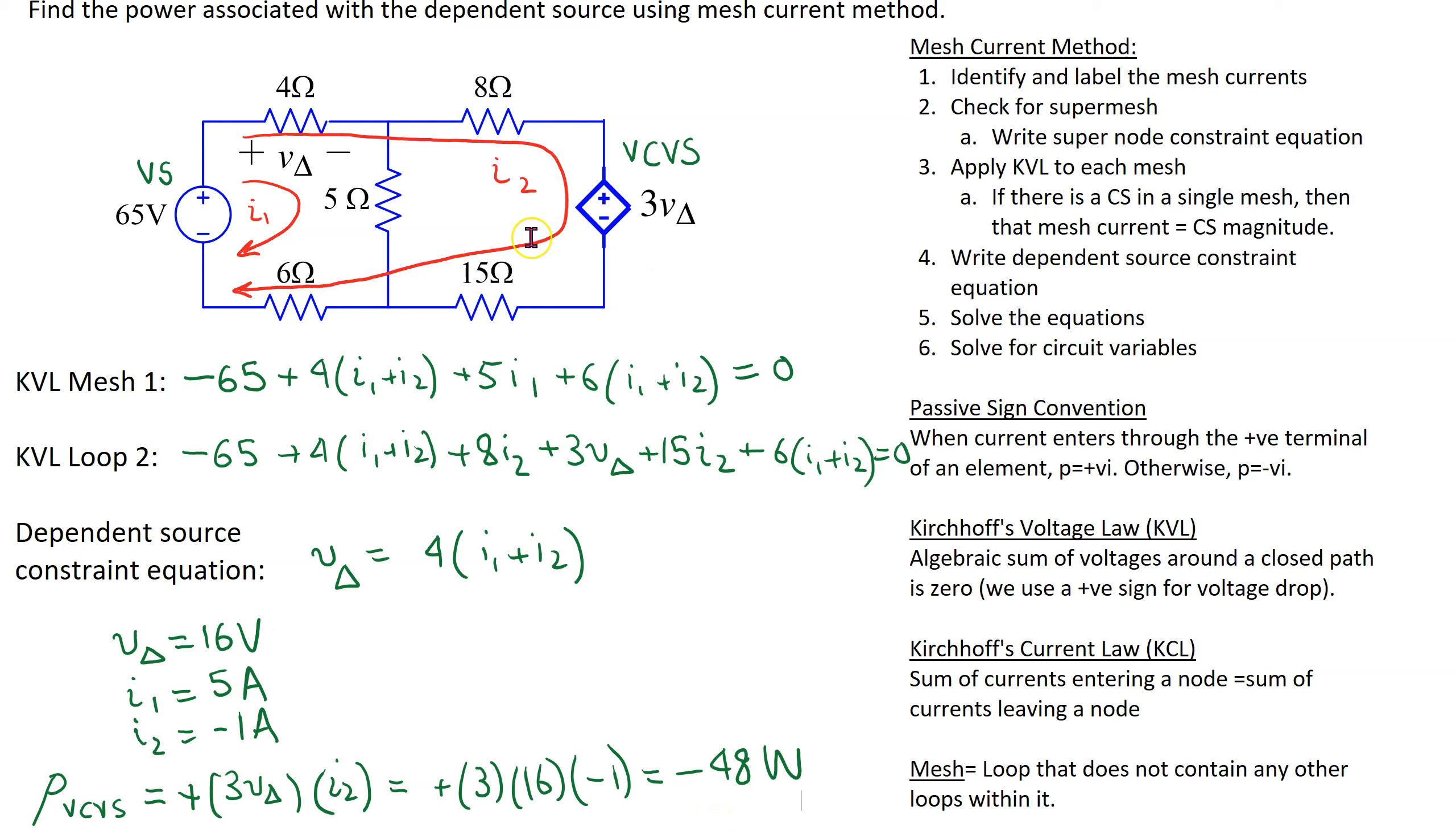So this example illustrates that mesh current method still works if we have a combination of mesh and loops in the circuit. However, by convention, we use mesh current method with mesh currents only.